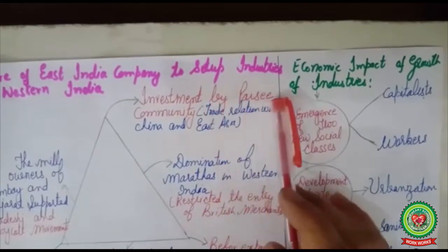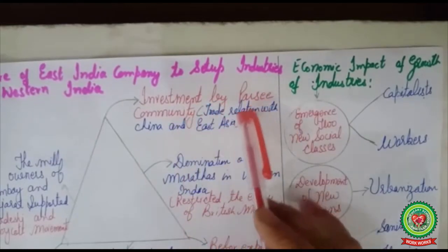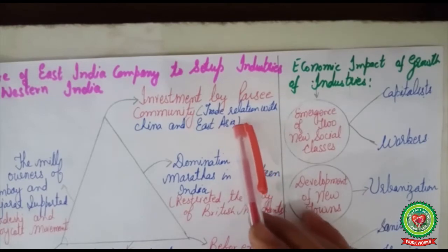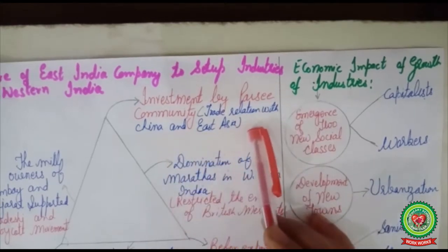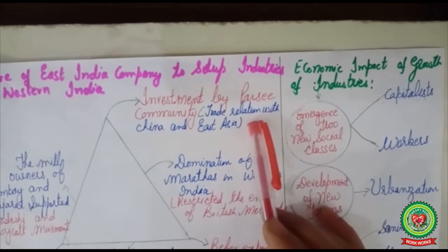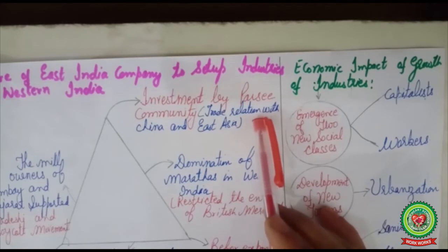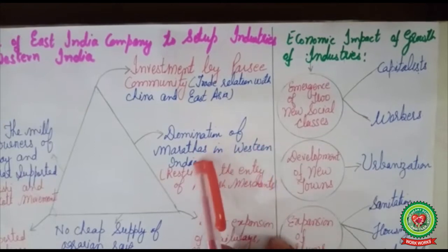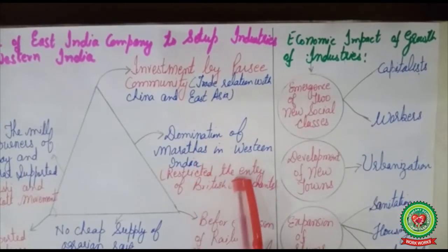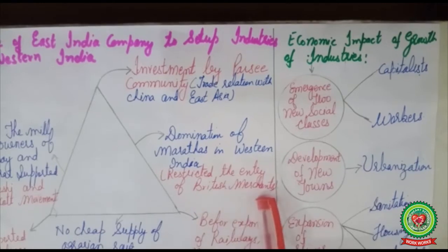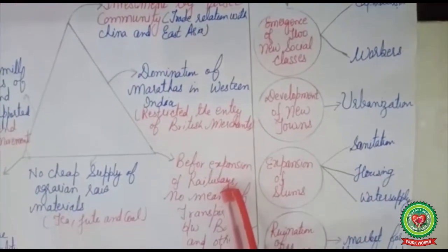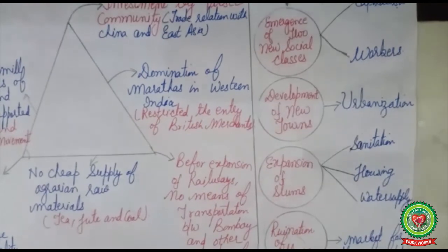The first reason was investment by the Parsee community. The Parsee community was predominant in Gujarat and Maharashtra. They had accumulated a lot of wealth through trade relations with China and East Asia, and had already invested in cotton textile mills there, leaving no scope for the East India Company to invest in western India. Additionally, the western India was dominated by the Marathas, who restricted the entry of British merchants and prevented them from establishing their monopoly there.